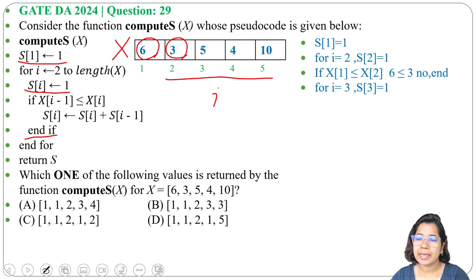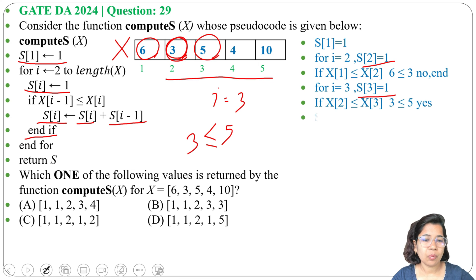Next, i will be 3. If X[i-1] ≤ X[i], is 3 ≤ 5? Yes, three is less than five. Then S[i] will be S[i] + S[i-1], means S[3] will be S[3] + S[2]. So here S[3] value is 1, S[2] is 1, so S[3] will be 1 + 1 = 2.